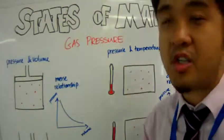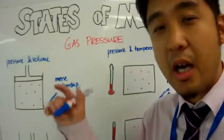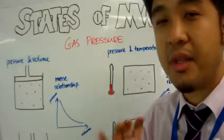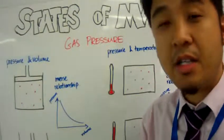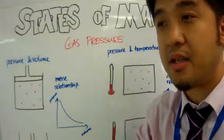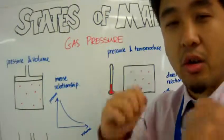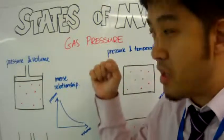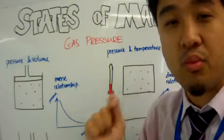Today we're going to talk about gas pressure. What is gas pressure? Gas pressure is merely an accumulation of all these tiny forces of these gas particles when they hit the wall of the container. The behavior of gas particles is random — random speed and random direction — so they're moving all over the place. When the gas particles move around, they either collide with each other or collide with the wall of the container. When a particle hits the wall, it exerts a tiny force on it. An accumulation of all these tiny forces is what we call gas pressure.